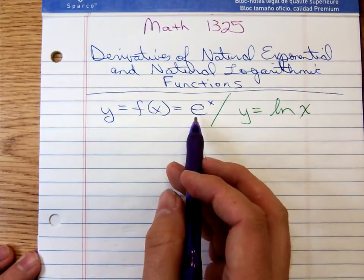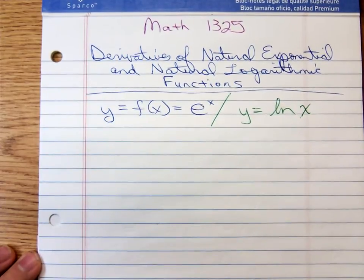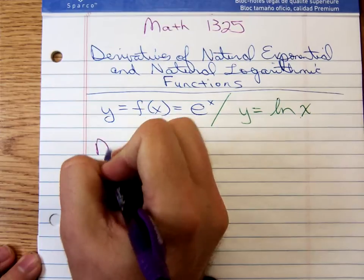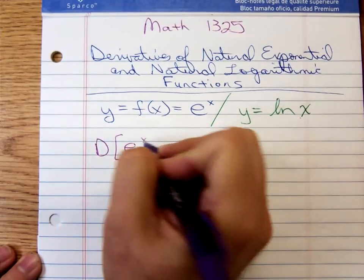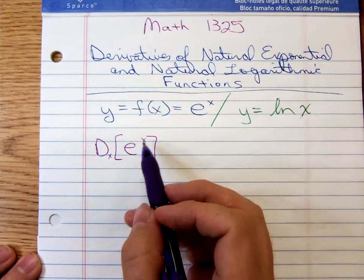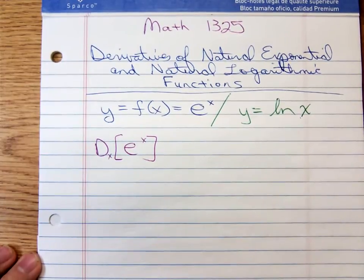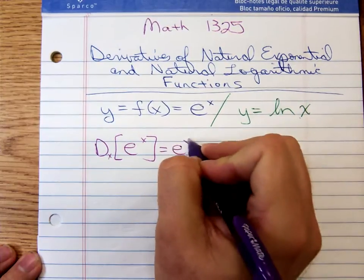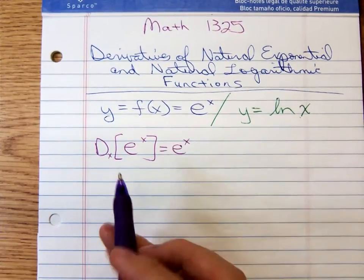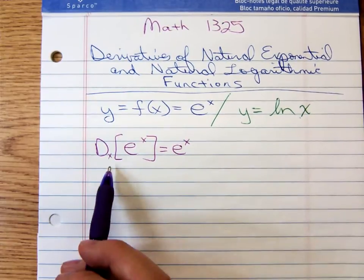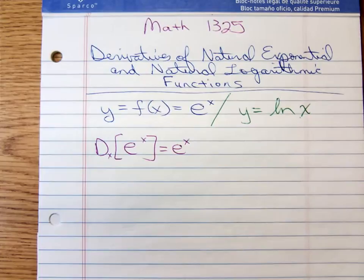Let's start with the derivative of e to the x. These are new derivative formulas you'll need to memorize. The derivative with respect to x of e to the x — the derivative of e to the x is just e to the x. That's the easiest function you'll ever have to differentiate. As long as it's just e to a single variable, the derivative is e to that single variable.